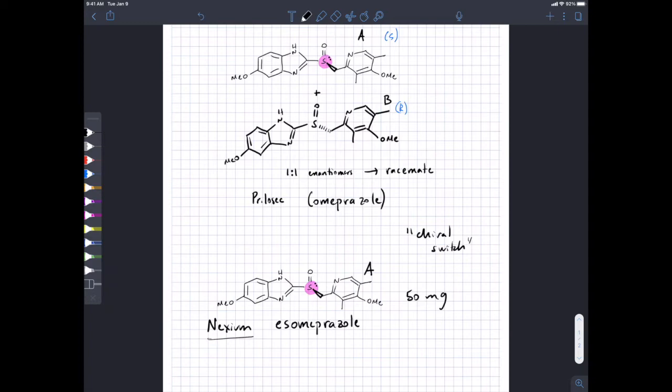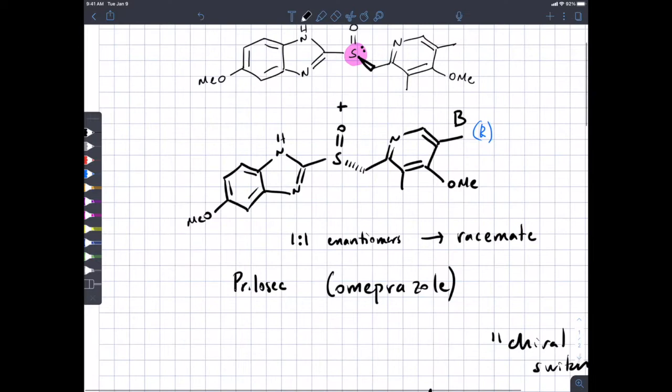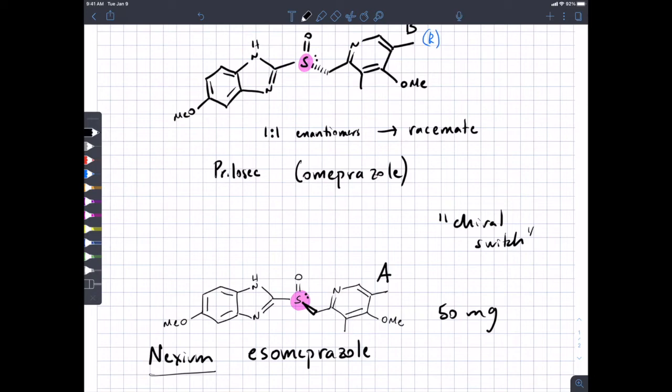Colton, you're asking how can they be enantiomers when there's no stereogenic center? It turns out a sulfur, this sulfur is bonded to three things, but also has a lone pair that occupies a specific position and doesn't really invert. And so in this isolated case, sulfur can be a stereocenter. I won't ask you to assign stereochemistry there.